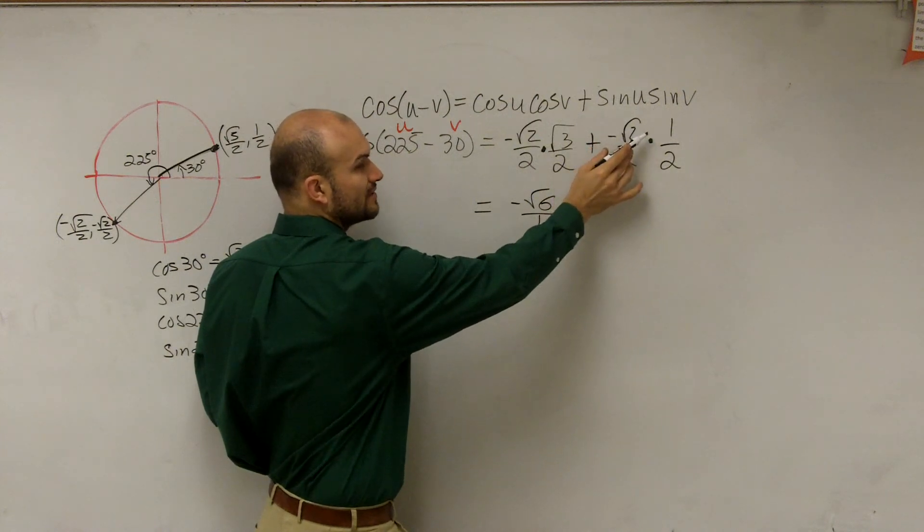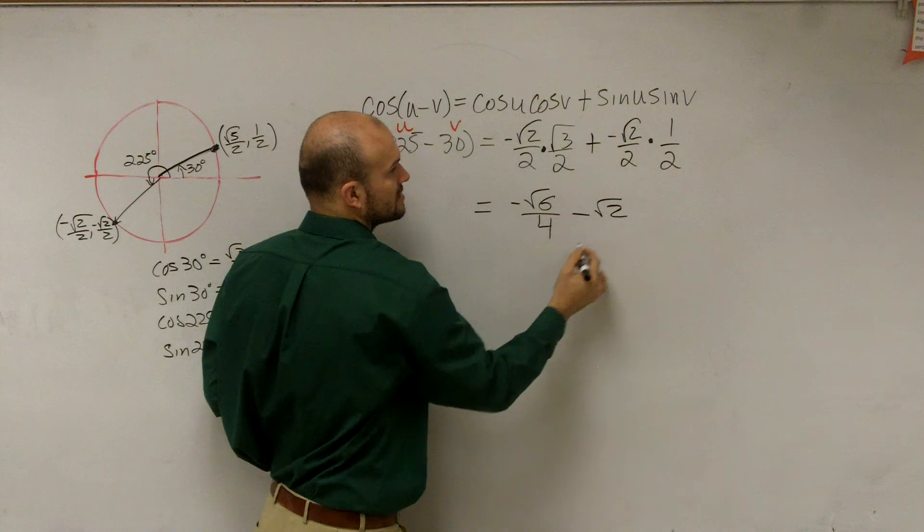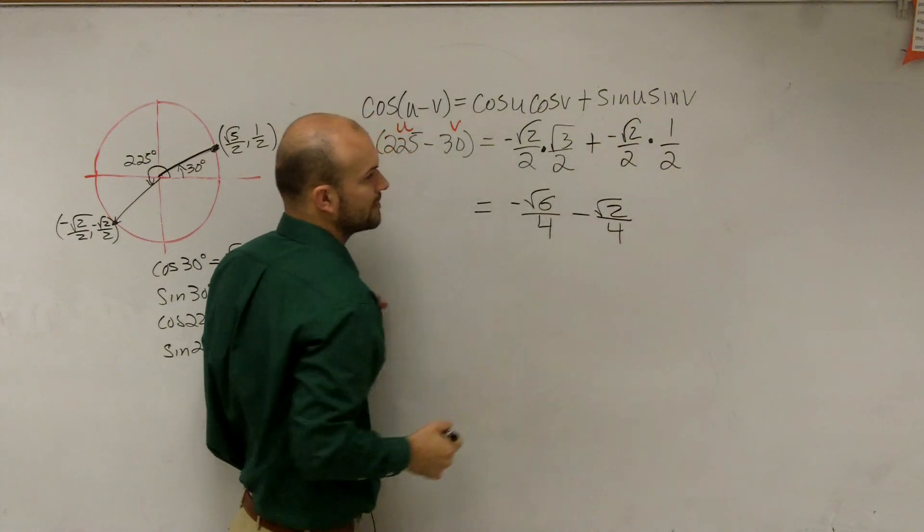And then this is negative square root of 2 times 1 is going to be a negative square root of 2. So it's going to be negative square root of 2 over 4.